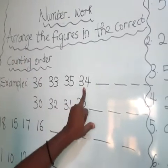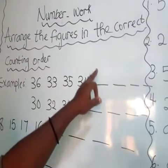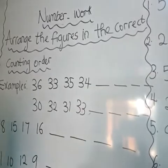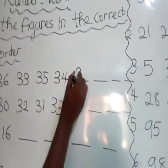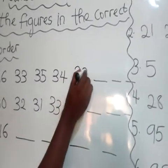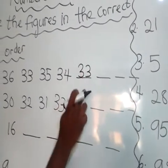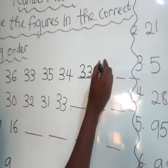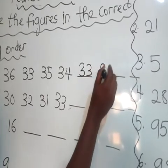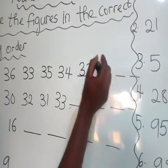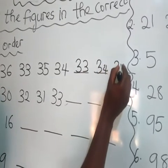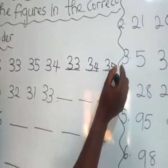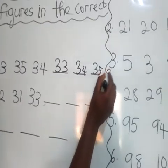Which one comes first? We have 33 as the first number. 33, followed by 34, followed by 35, and then 36.